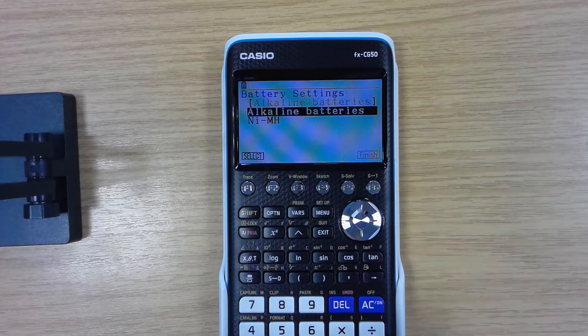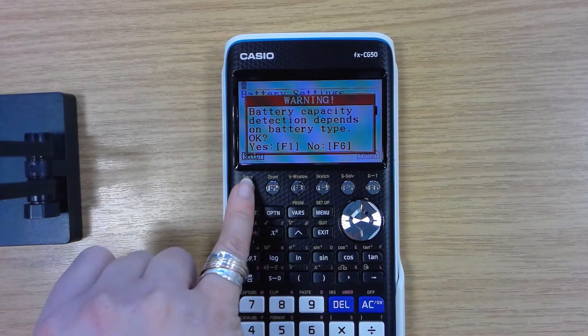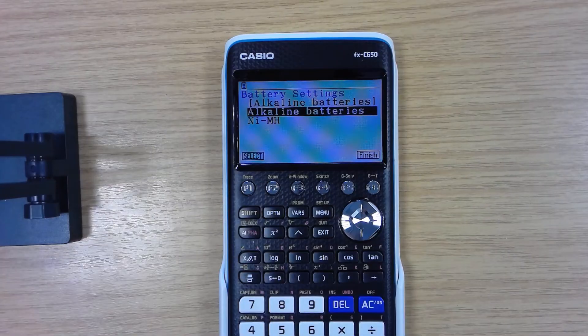Next, these are alkaline ones I've put in. It wants you to make sure that they're alkaline ones, the ones that come with them are. So F1 again and then we finish.